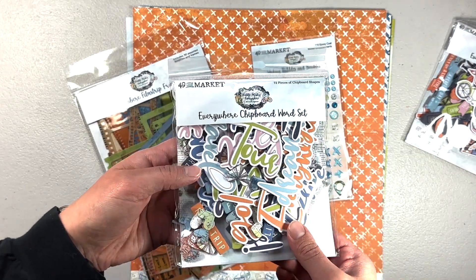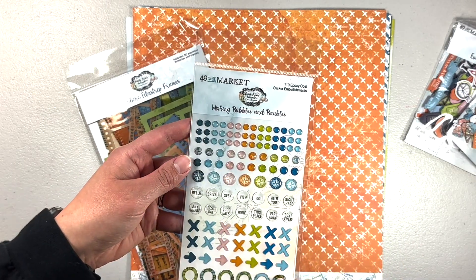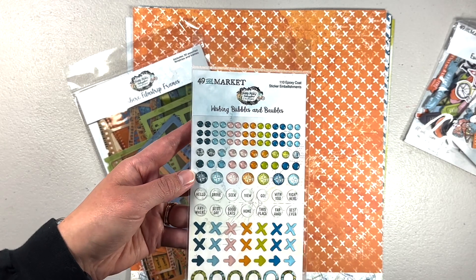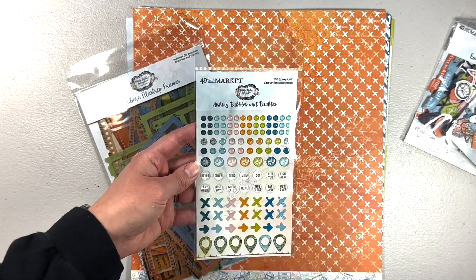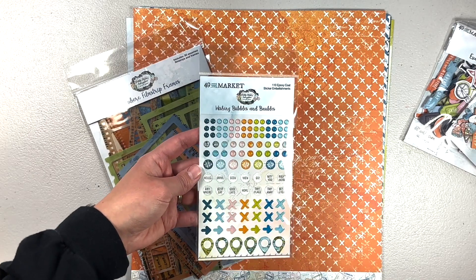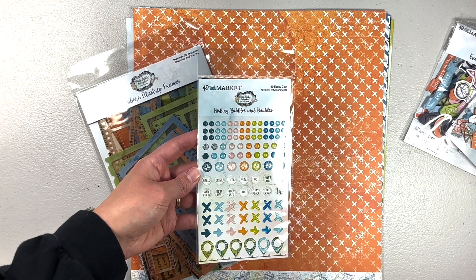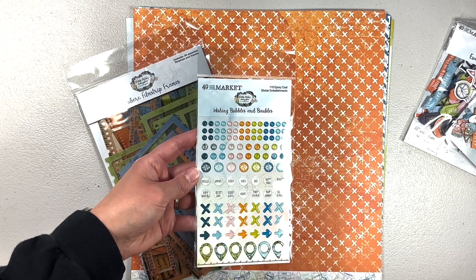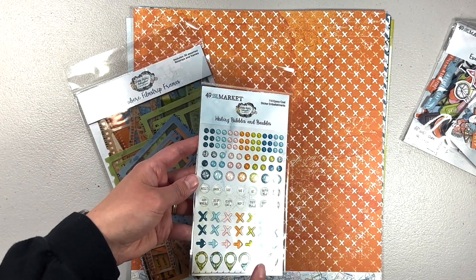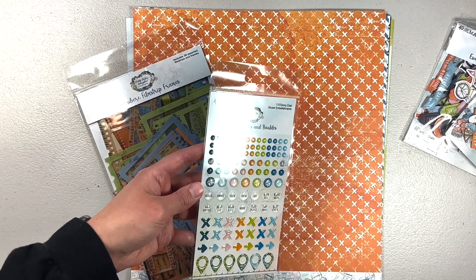Then I got Wishing Bubbles and Baubles. These are epoxy, just some fun little pieces. Do you think those are fun? I like how they're shiny. I like the colors, especially the blues—that's my favorite. This is a good collection because I can scrapbook you and your brother, but I can also scrapbook me and use some of the pinks.